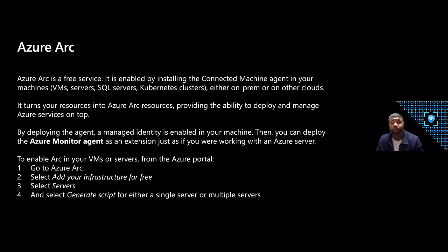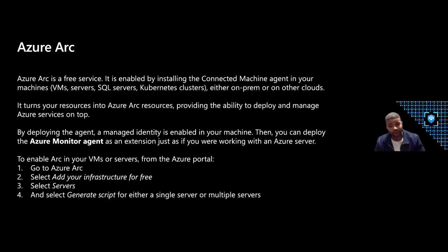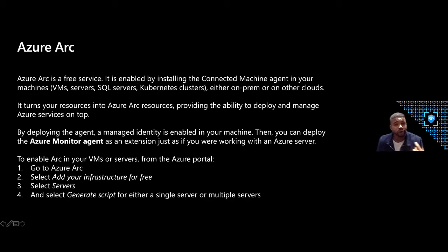To enable Arc on your servers: go into the Azure portal, go into Azure Arc, select 'add your infrastructure for free,' select which servers to deploy the extension on, then generate a script for either a single server or multiple servers. Because we have Azure Arc and Azure Monitor agent, we can deploy at scale using Azure Resource Manager. We've covered the why behind the new agent, how to bring in data from disparate environments, and how Azure Arc fits in for non-Azure VMs. Now Maria will cover the supported scenarios.